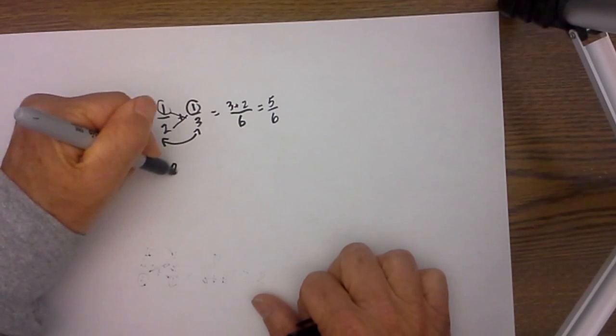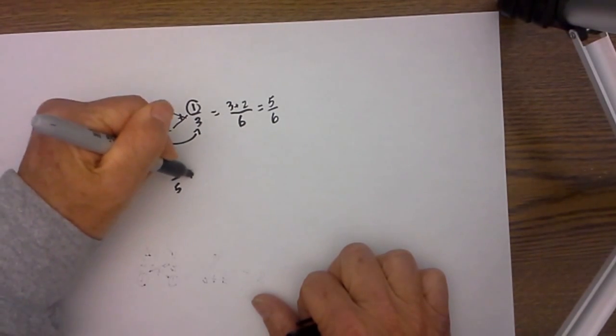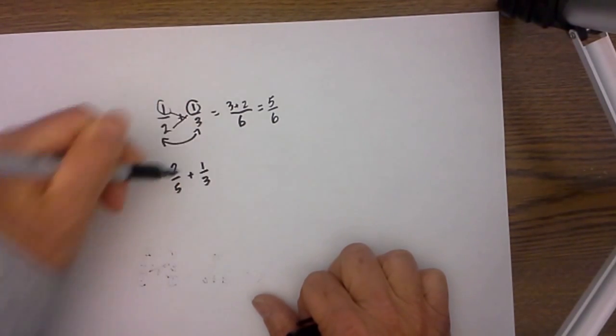Let's go to another example. 2 fifths plus 1 third. Let's go with Mr. Smiley.